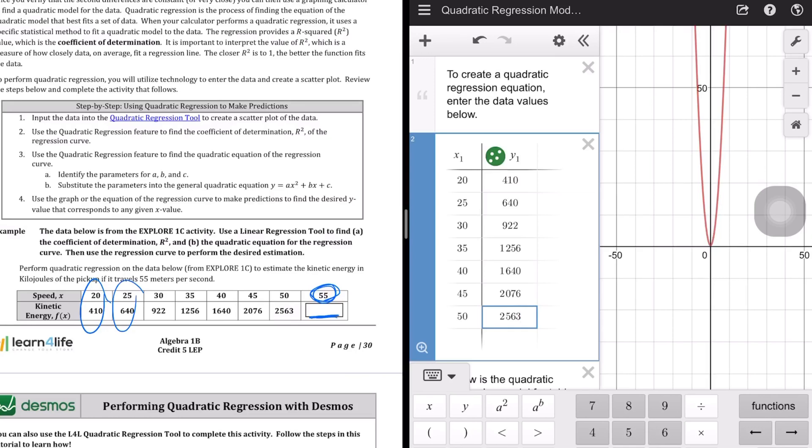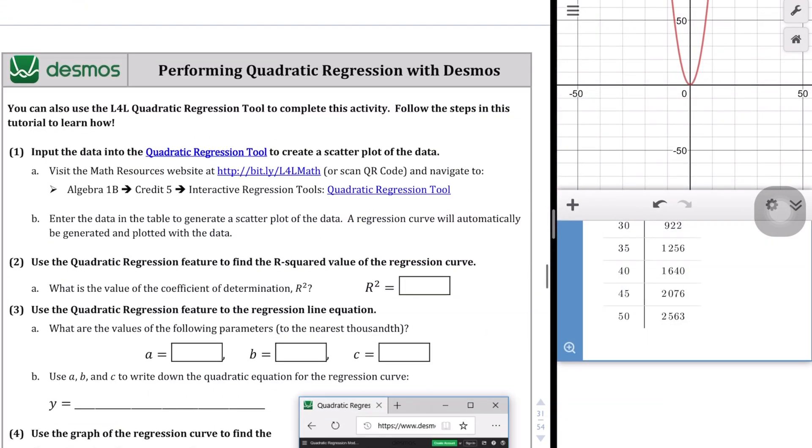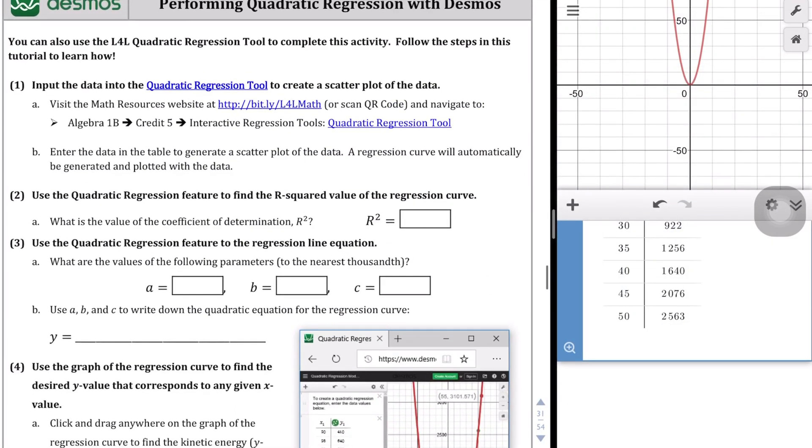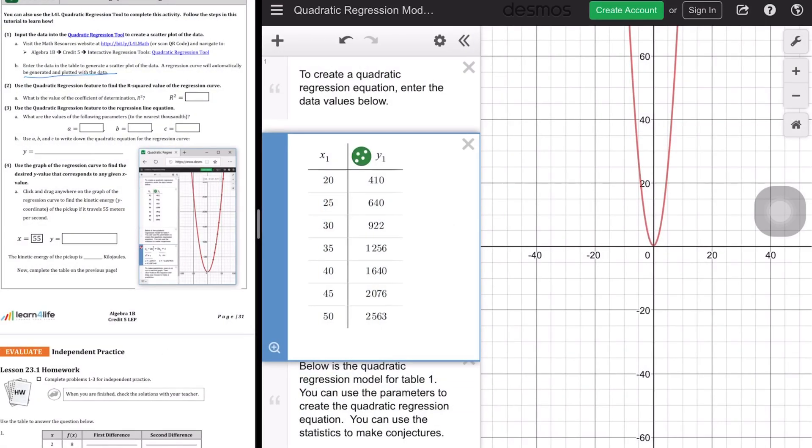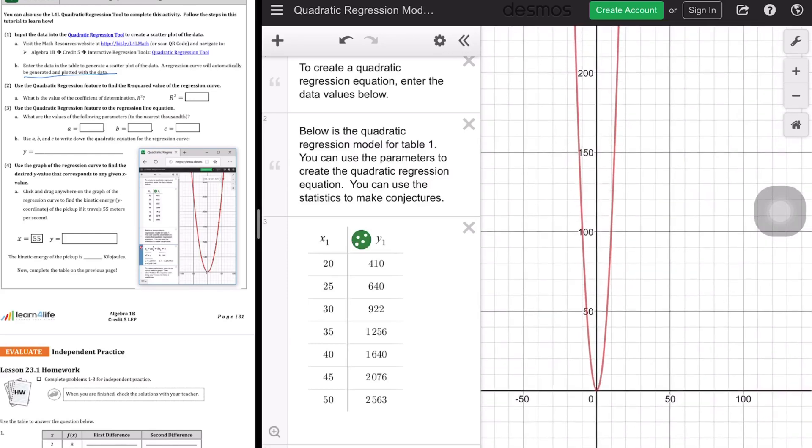So we've input all the values and if we take a look at the instructions here. Now that we've input the data to generate a scatter plot of the data, a regression curve will be automatically generated and plotted with the data.